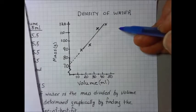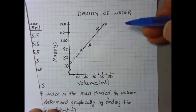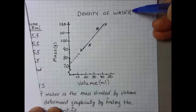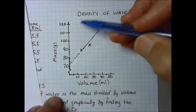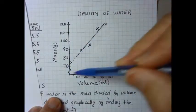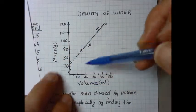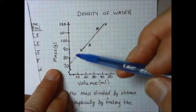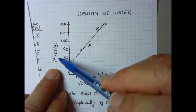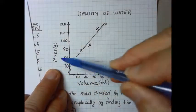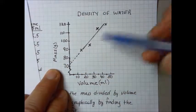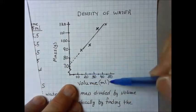A good graph is going to have a title. It's going to have, in this case, you've got a y-axis and an x-axis, and those are labeled clearly. I'm going to be making sure, I'm going to be checking to make sure that you have these axes in the proper order. I want the mass on the y-axis and I want the volume on the x-axis.